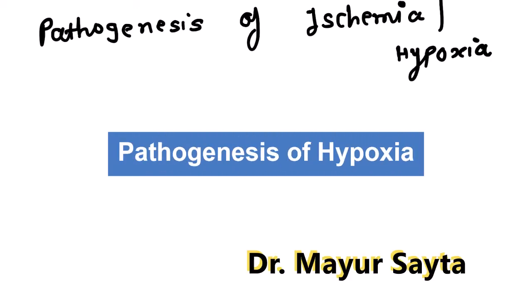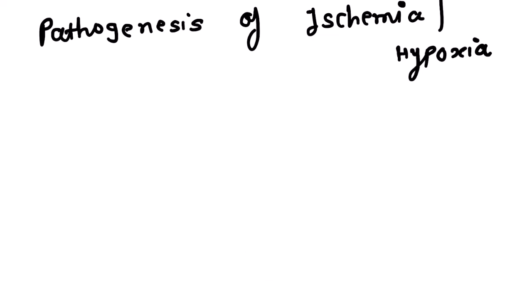Hello friends, myself Dr. Mayur Saida, and in this video we are going to discuss about the pathogenesis of ischemia or hypoxia — meaning when a particular cell is not getting enough oxygen, which is known as hypoxia, and what occurs as a result.